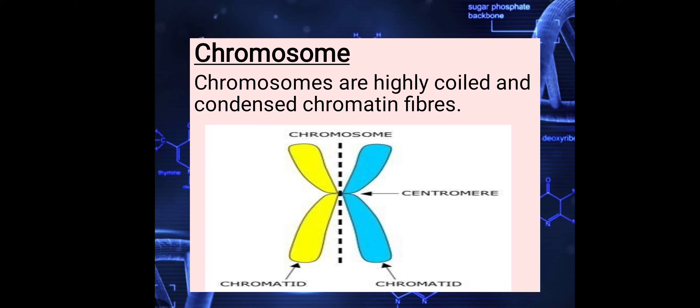So a chromosome is the highly condensed, coiled chromatin fiber. If we talk about chromosome structure, the chromosome has two arm-like structures called sister chromatids, and the point of attachment between the chromatids is called the centromere. This is all about the structure of chromosomes.